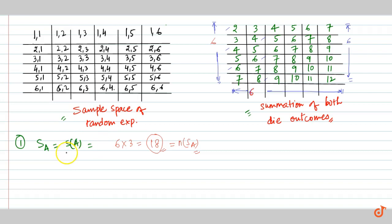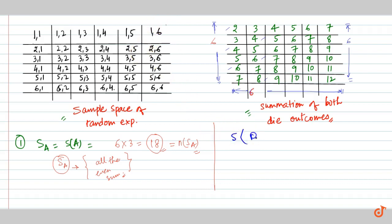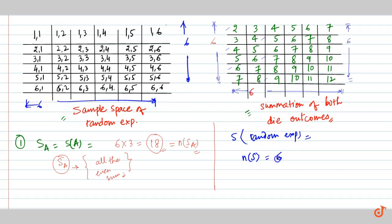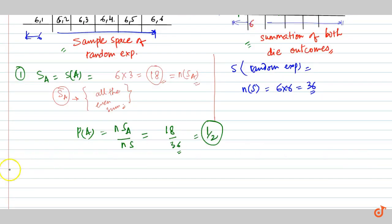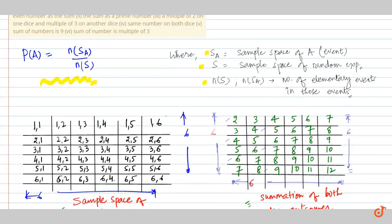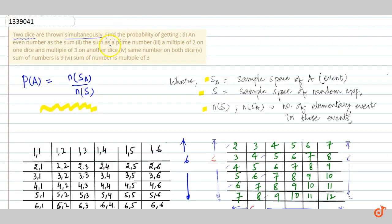Our SA will have all the even summation outcomes, so n(SA) equals 18. Our n(S), the random experiment sample space, is a 6 by 6 matrix, so it will have 36 elements. Clearly using the formula, the probability is n(SA) upon n(S) which is equal to 18 upon 36, giving half as a result.